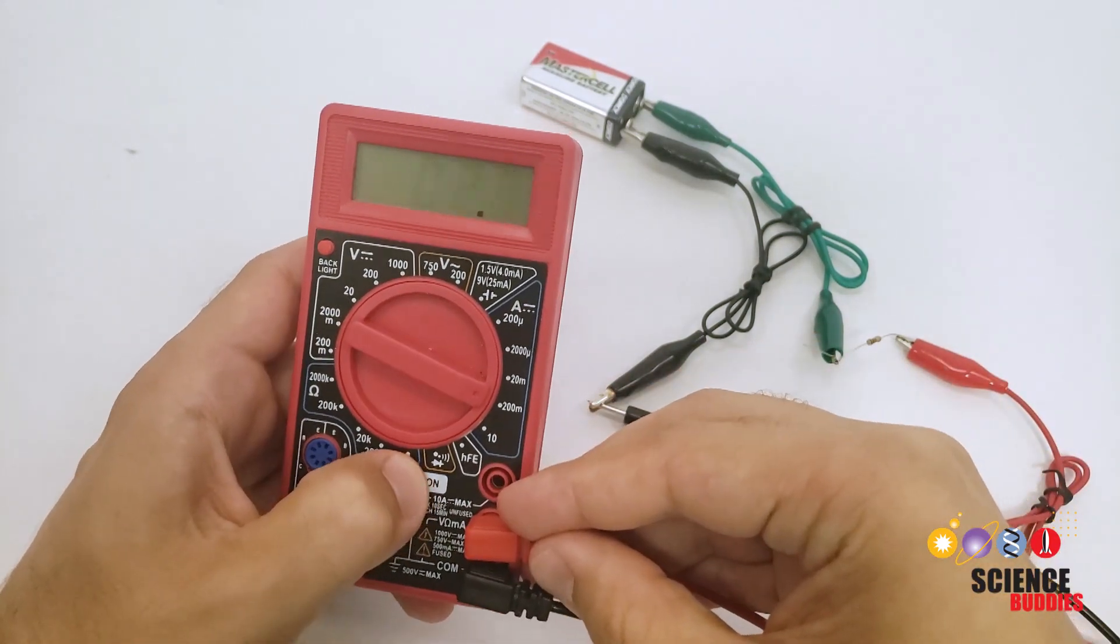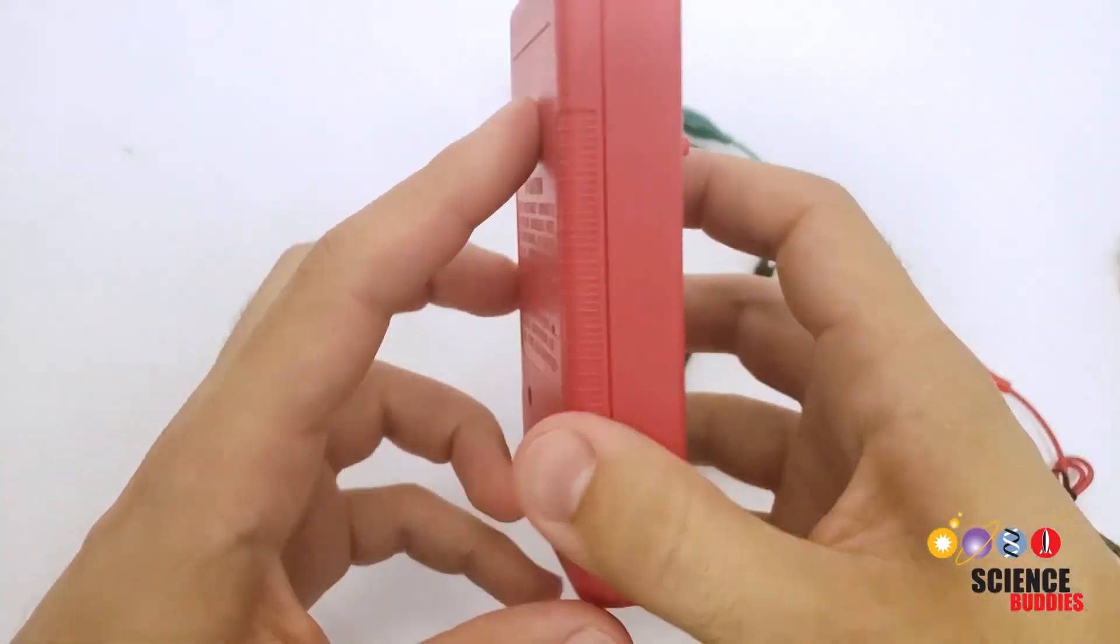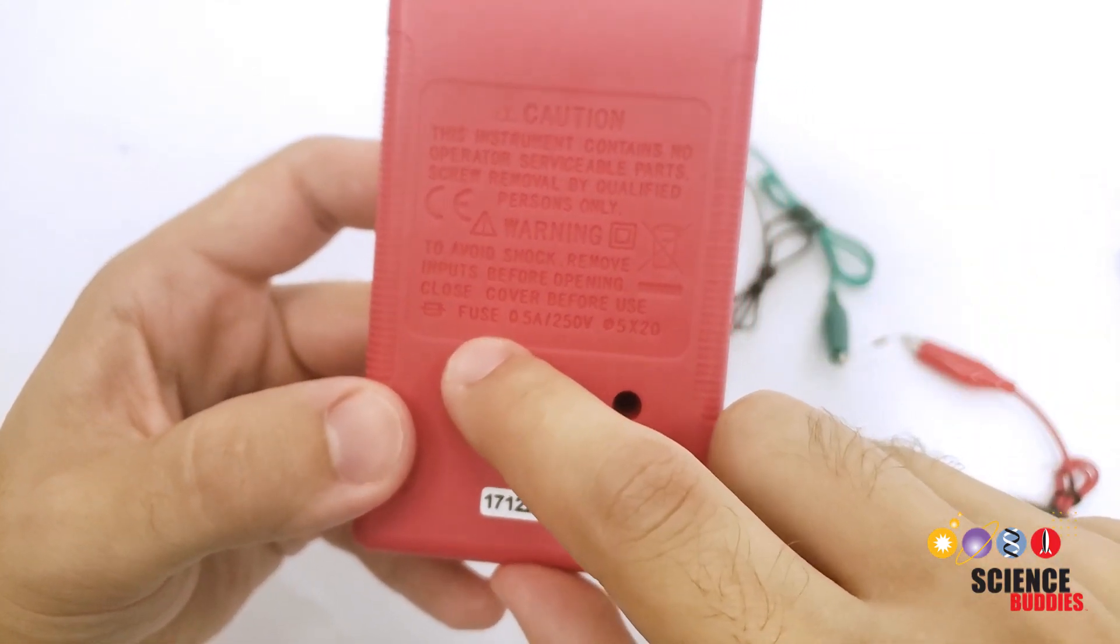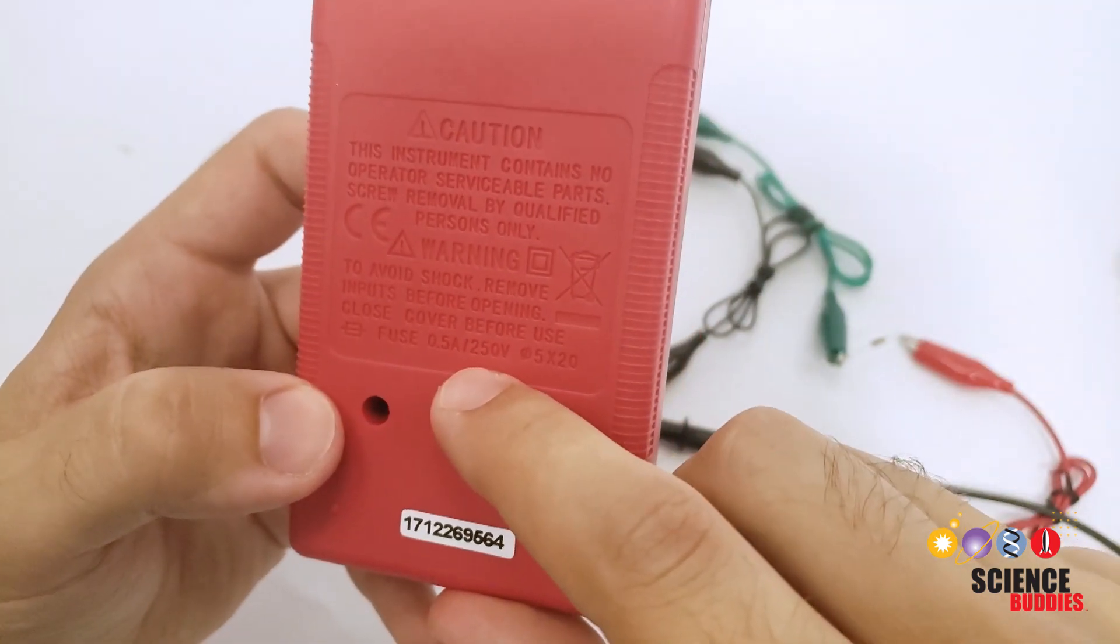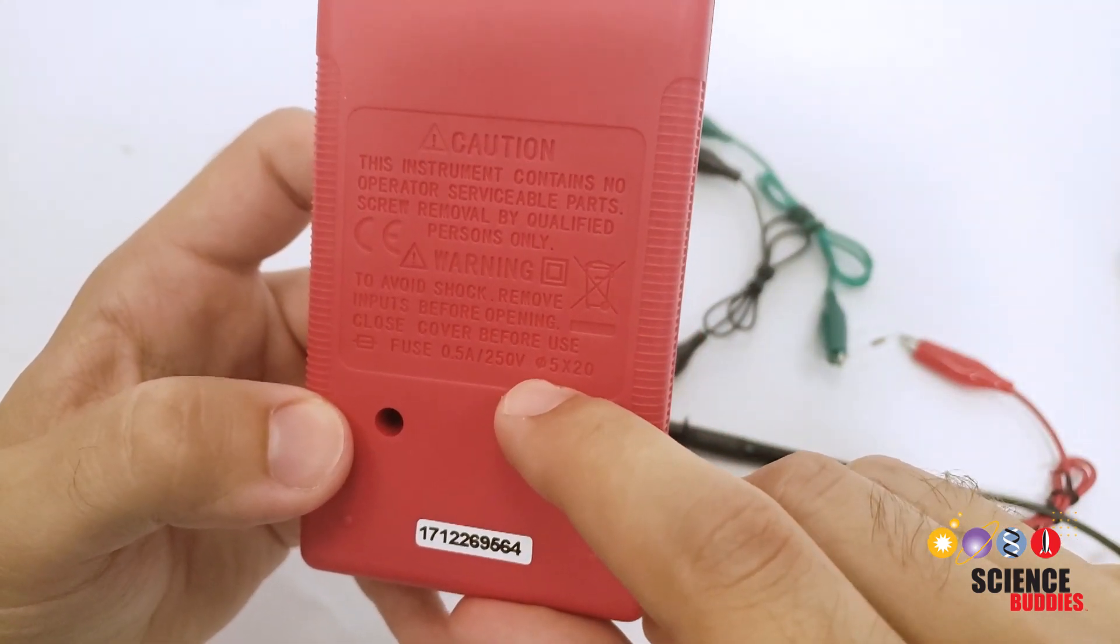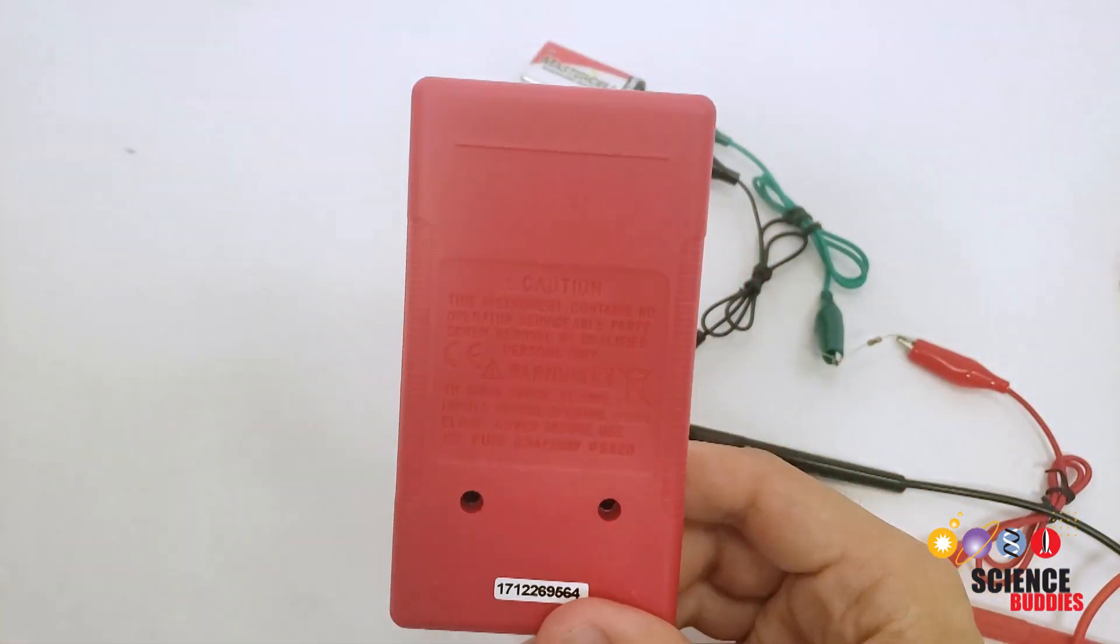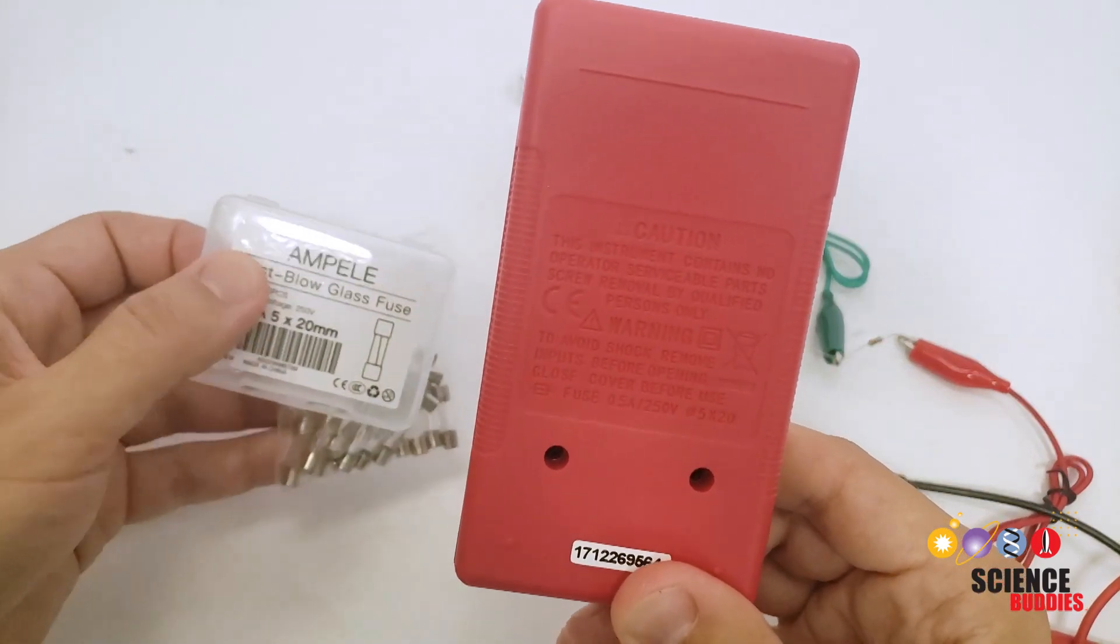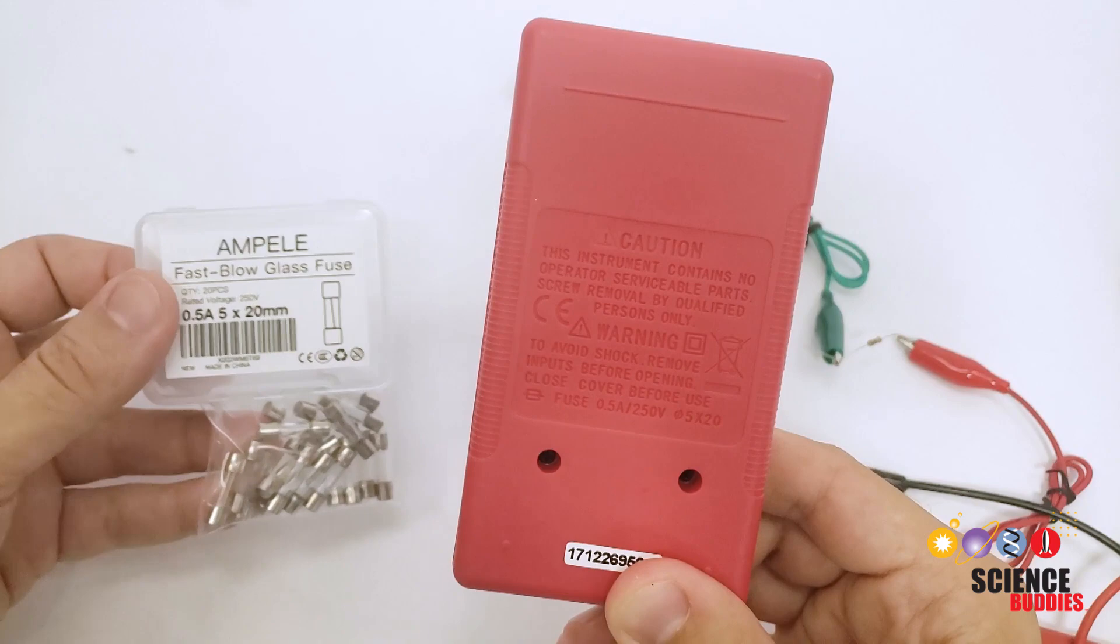So I'm going to switch my meter off, unplug the probes, and if you flip over on the back of your meter or you have your multimeter's manual, it should tell you what type of fuse you need. So in this case, I have a 0.5 amp or 500 milliamp 250 volt fuse that has a diameter of 5 millimeters and a length of 20 millimeters. So you may need to go buy an extra fuse. If your multimeter did not come with them, you can search online for those specs. And here I got a little box of about 20 replacement fuses for this meter.